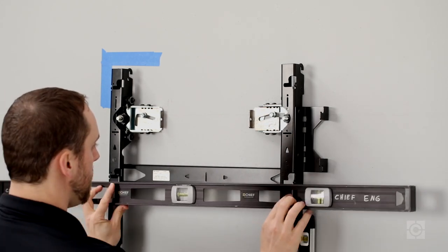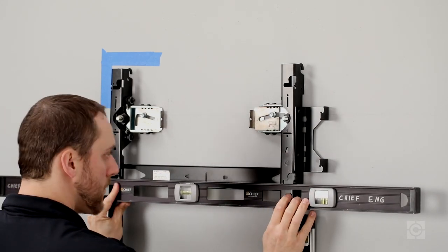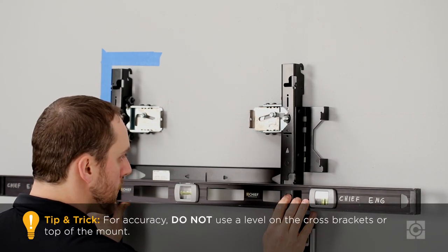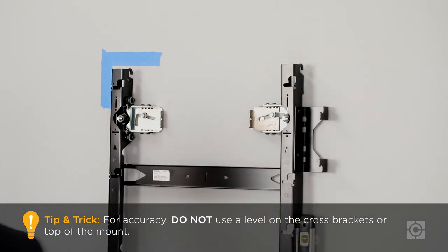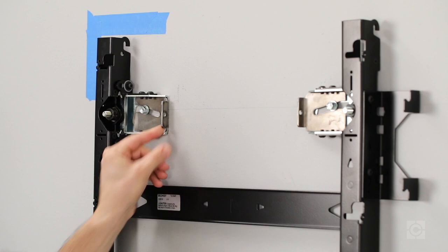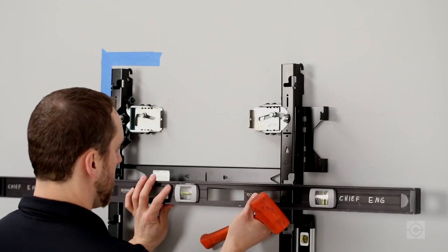Check to see if the mount teardrop slots are level on the first mount. Tighten one mounting point utilizing the height adjust washer. Check to ensure the mounting slots are level.